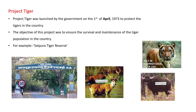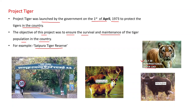Project Tiger was launched by the government on 1st April 1973 to protect tigers in the country. The objective of this project was to ensure the survival and maintenance of the tiger population — for example, the Satpura Tiger Reserve in Pachmarhi, Madhya Pradesh. Also remember that July 29 is celebrated as International Tiger Day every year.